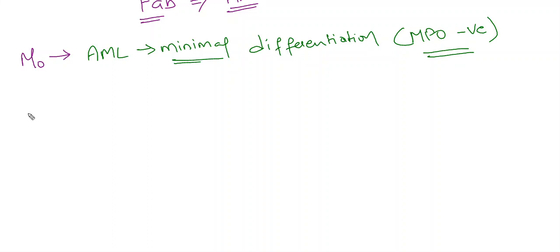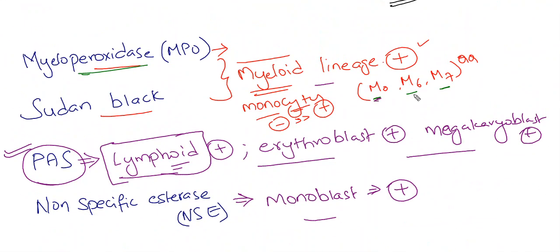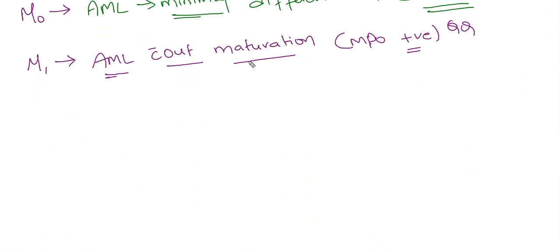Coming to M1, M1 is AML without maturation. Myeloperoxidase is present but they are not matured. But it will be positive for myeloperoxidase. You have to remember only M0, M6, M7 are myeloperoxidase negative. M1 is myeloperoxidase positive.